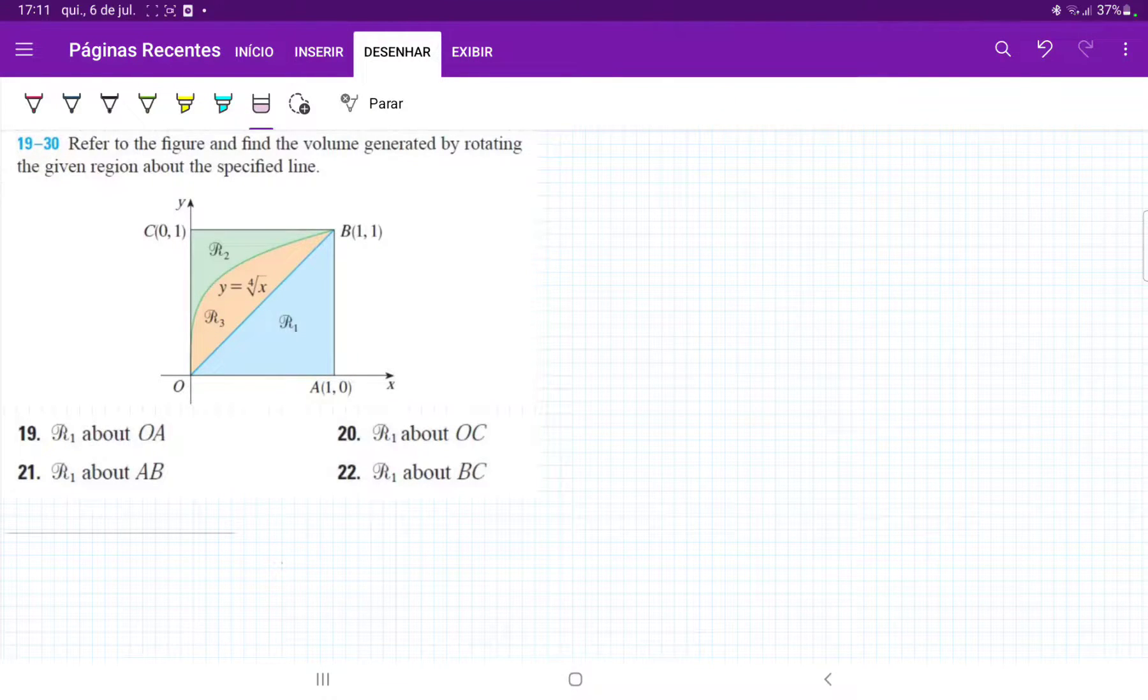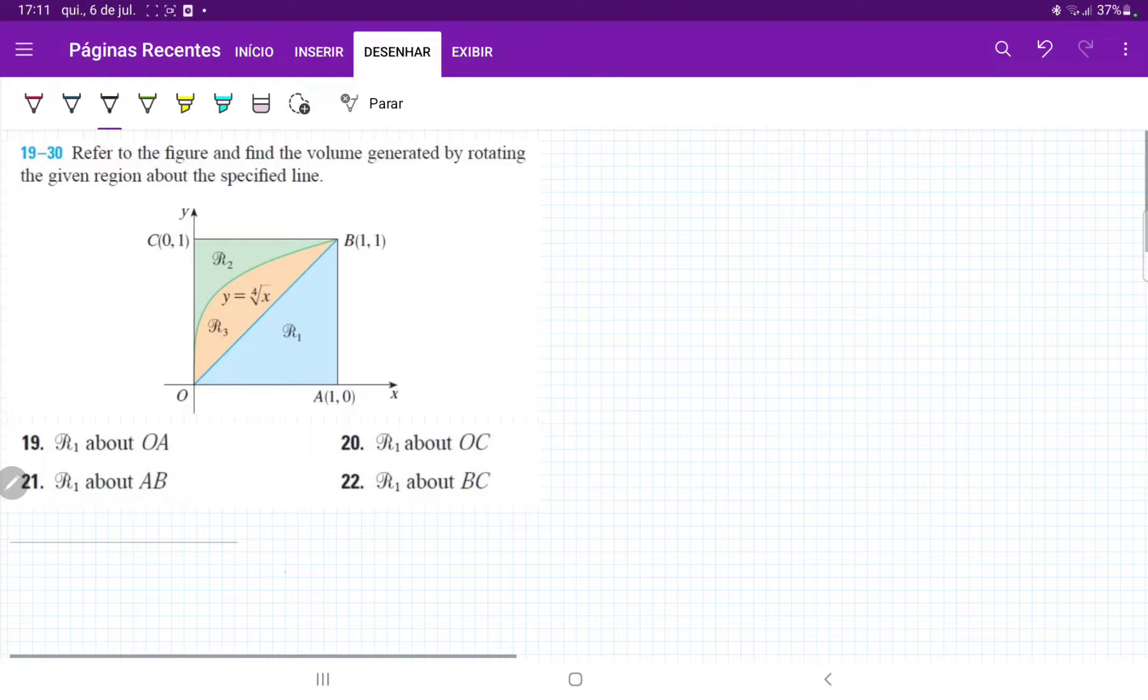So for number 19, we want to take this R1, this region in blue, and then revolve it about the line OA. So it's this line on the x-axis that begins here at 0 and then goes all the way out to x is equal to 1.